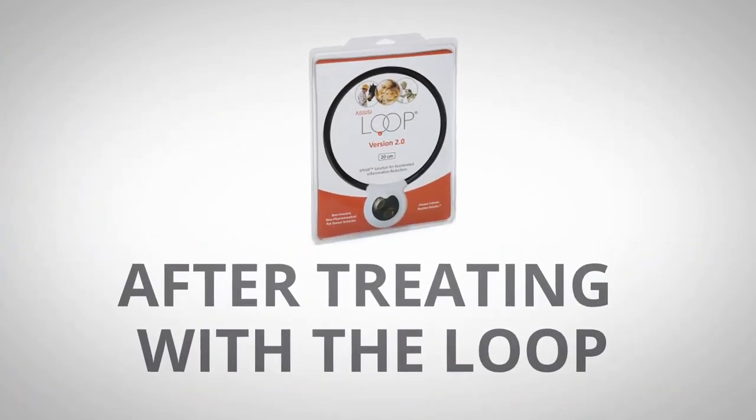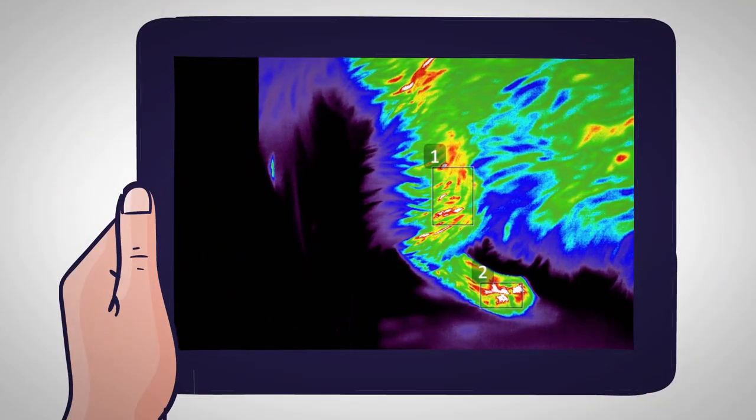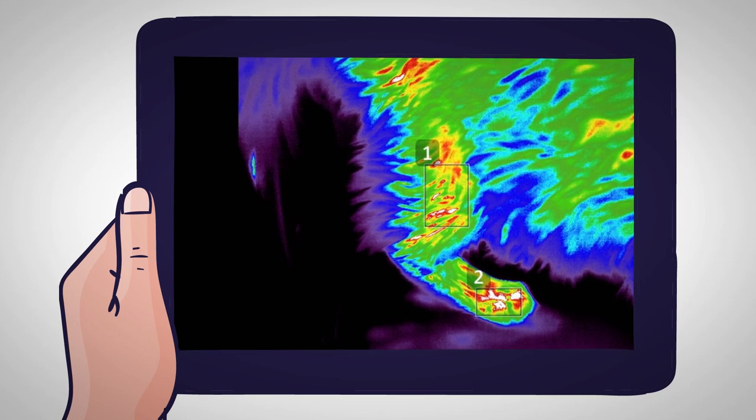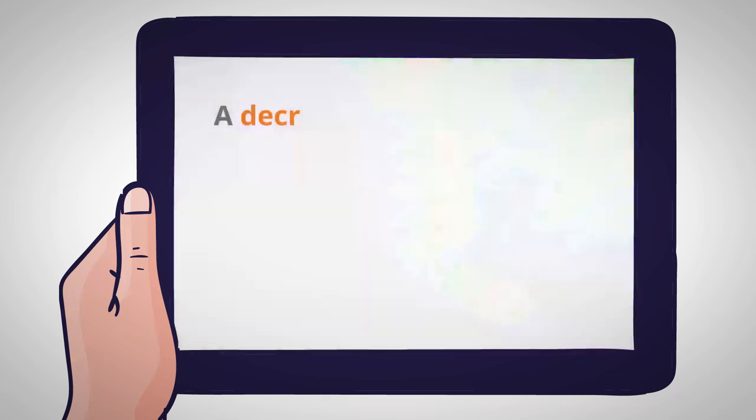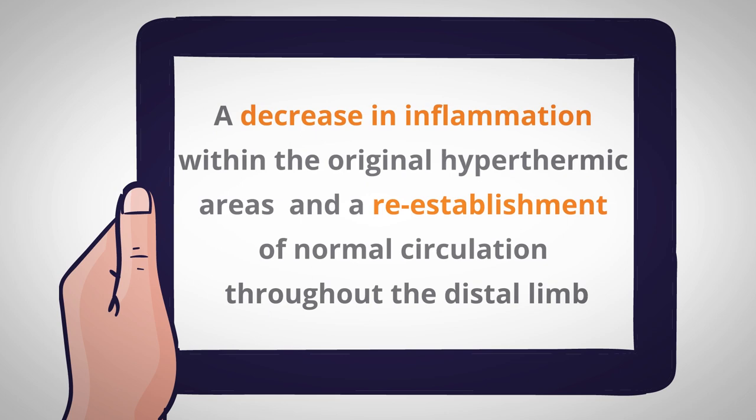After treating with the loop, the right stifle experienced a 91% decrease in the hyperthermic activity. Also, there was an increase within the thermal gradients throughout the distal limb. Interpretation: a decrease in inflammation within the original hyperthermic areas, and a reestablishment of normal circulation throughout the distal limb.